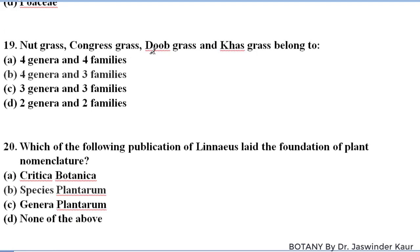Nut grass, congress grass, dub grass and khas grass — we have to identify the families and genera they belong to. Nut grass is the common name of Cyperus rotundus, belonging to family Cyperaceae. Congress grass is the common name of Parthenium, belonging to family Asteraceae. Dub grass is the common name of Cynodon dactylon, belonging to family Poaceae. Khas grass is the common name of Chrysopogon zizanioides, also belonging to family Poaceae. These four plants belong to four different genera and three different families.